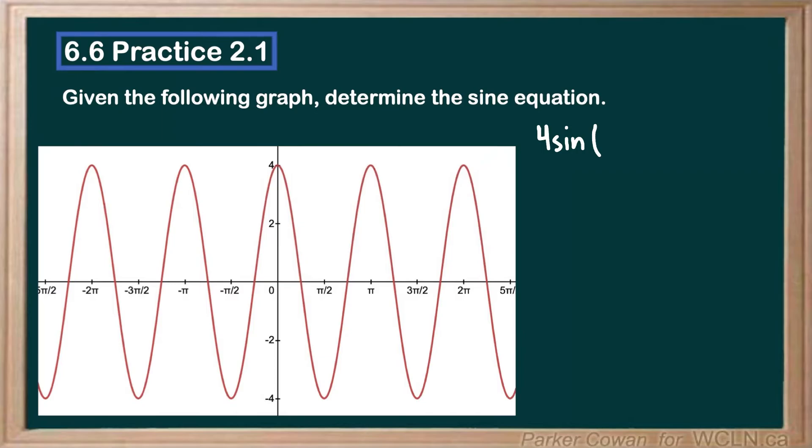Looking at our period here, we notice, measuring from peak to peak, that our period appears to be shrunk by a factor of 2, because we only get to π. So if we want to shrink the period by a factor of 2, we put a 2 coefficient out front. Remember, it's inverted from the y-axis.